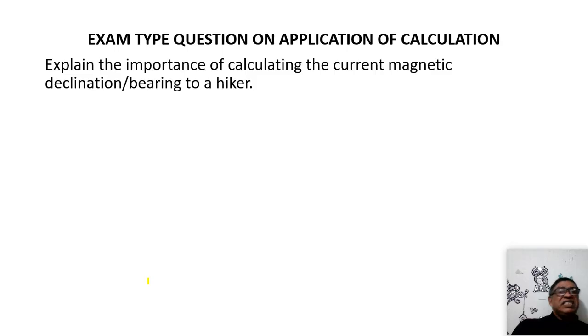Eventually, exam type questions on the application of this: explain the importance of calculating the current magnetic declination or bearing for a hiker. One of the things is if you don't have the correct magnetic declination or bearing, the hiker is using the map and walking in a certain direction. If he doesn't have the correct direction for the current year, if he's using 1997, he will never reach his destination or he will get lost.